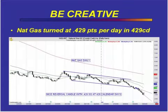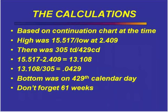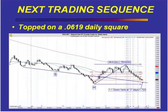If you want to get creative — this was September 2009 — we had a sequence in natural gas, which was in a horrible bear market, where the reading was 0.429 points per day in 429 calendar days. It was also 61 weeks down at that point. Look at the follow-through from that — up to that point, it was one of the best counter-trend bear market rallies that NatGas had in its entire sequence.